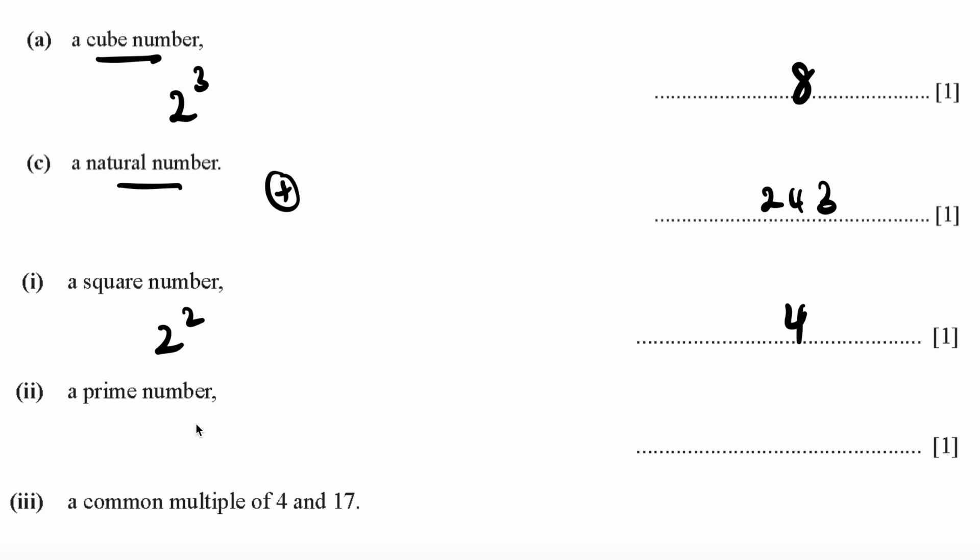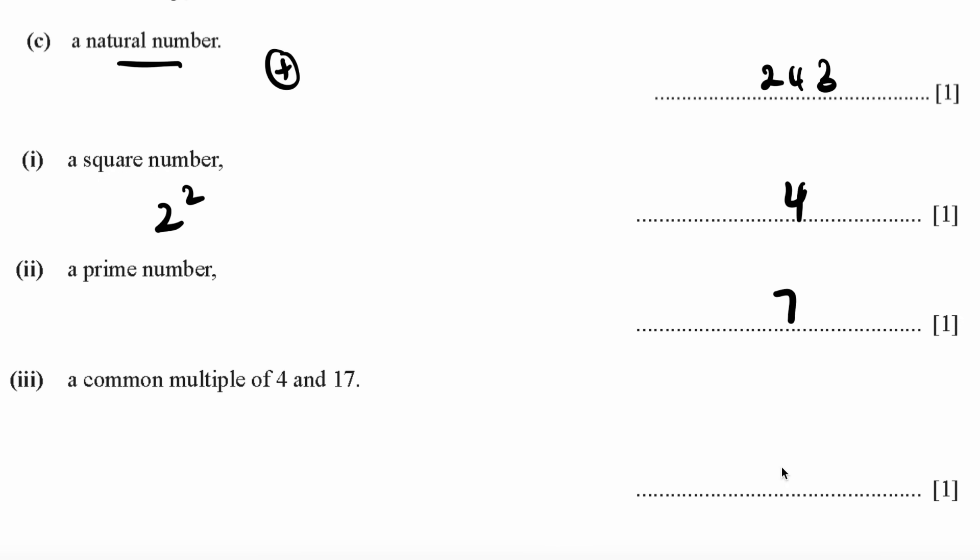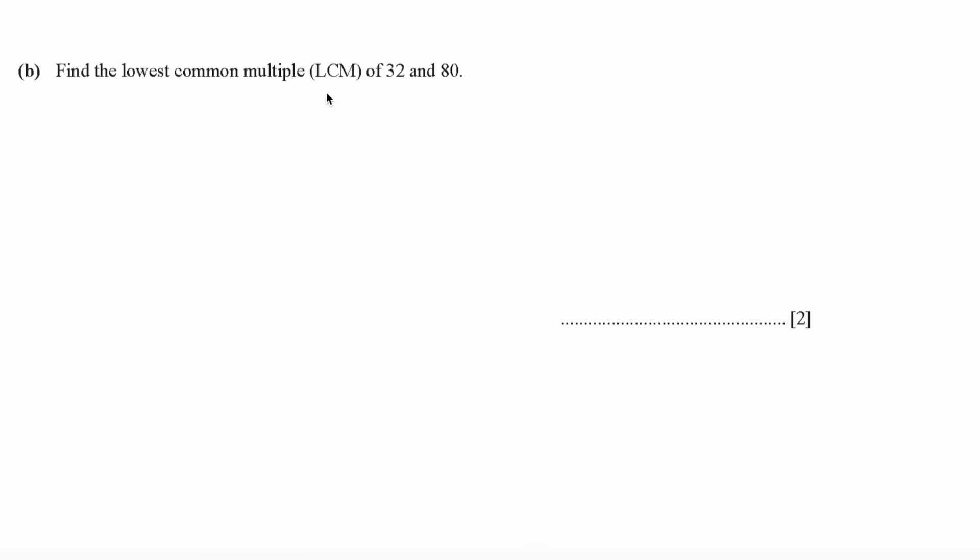A prime number is a number that can only be divisible by itself and 1, for example 7. A common multiple of 4 and 17 would be 68. To find the common multiple, you have to find the factors. In this case it will be 32 here, 80 here. The factor 4 will multiply to 8 and here 20, and then 4 will multiply by 2 and multiply by 5. Hence 4 times 4 times 2 times 5 equals 160.